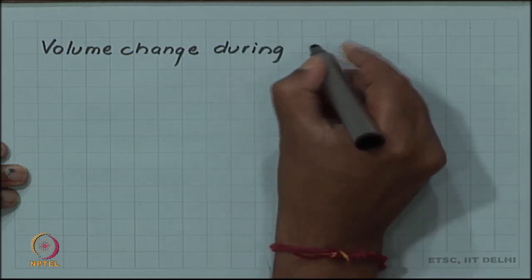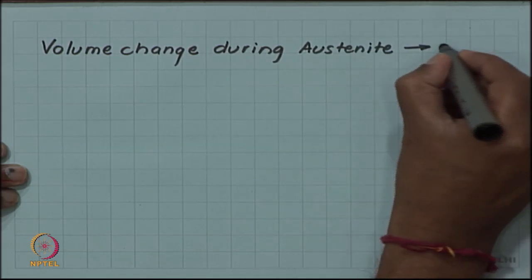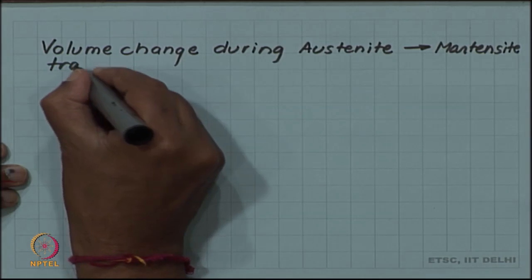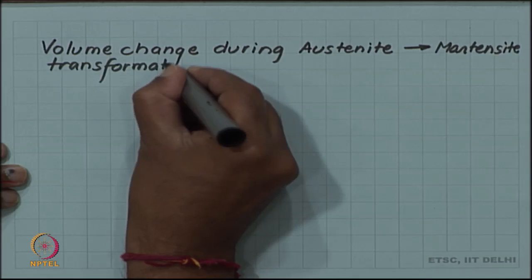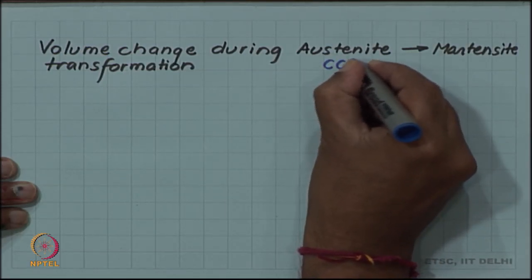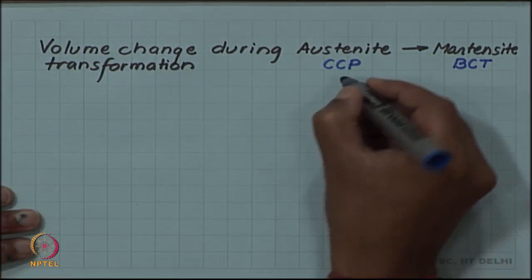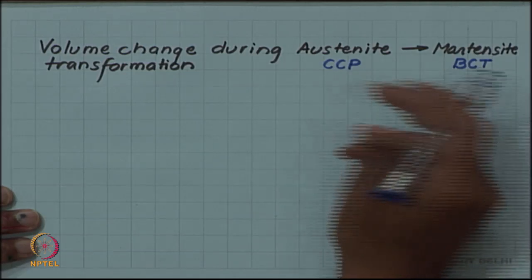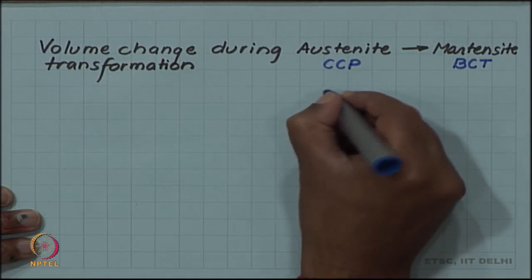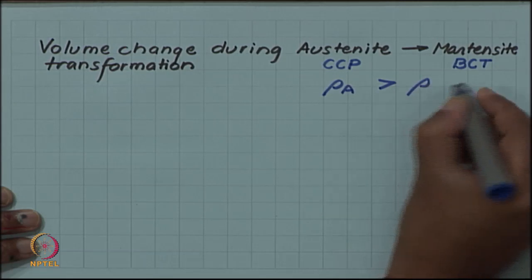Volume change during austenite to martensite transformation. We have looked at the crystal structure and we said that the austenite was cubic close packed, whereas martensite was body centered tetragonal, which obviously means that a cubic close packed structure is the densest packing possible for a given set of atoms. So this will have the highest density. So if I write by rho the density, density of austenite is greater than density of martensite.